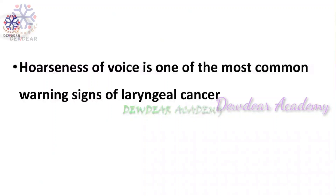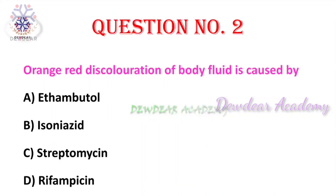Question 2: orange-red discoloration of body fluid is caused by which drug? Options: ethambutol, isoniazid, streptomycin, rifampicin. The right answer is rifampicin. Rifampicin is an anti-tuberculosis drug and it can cause orange-red discoloration of body fluids.